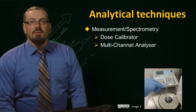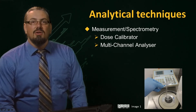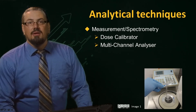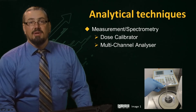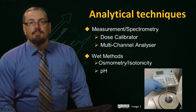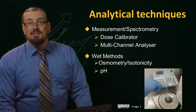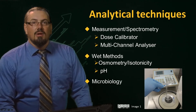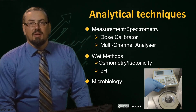In this section, you will gain an appreciation of how to test these product specifications using different test methods and analytics. Some of the techniques include measurement of the quantity of radioactivity present using a dose calibrator — Image 1 is a picture of a dose calibrator. WET methods are employed for testing parameters such as isotonicity and the pH of the radiopharmaceutical preparation.